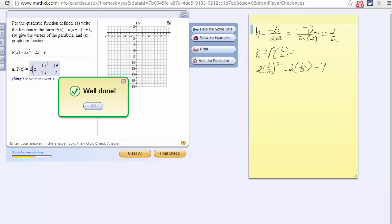Now, to find k, I take 1 half and substitute it for x. So I'll have 2 times 1 half squared minus 2 times 1 half minus 9. That's negative 19 over 2, which goes in for k.